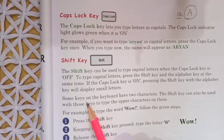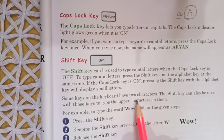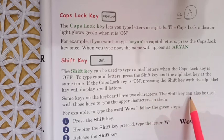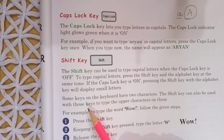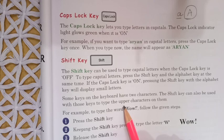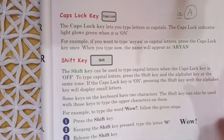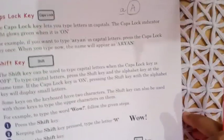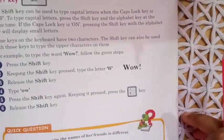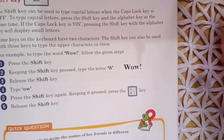Some keys on the keyboard have two characters. The shift key can also be used with those keys to type the upper characters on them. So the shift key can perform two types of work.